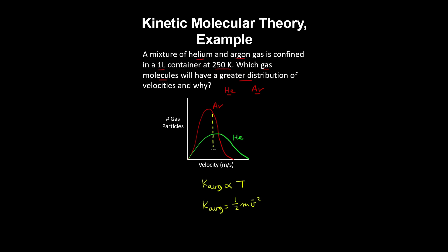Therefore, the average velocity of the argon gas particles is going to be smaller than the average velocity of the helium gas particles, given that both gases in a mixture have the same average kinetic energy.